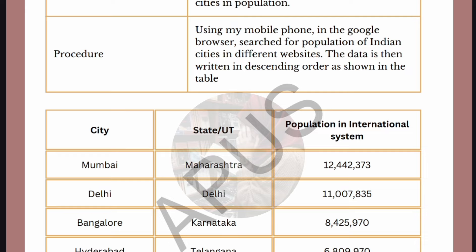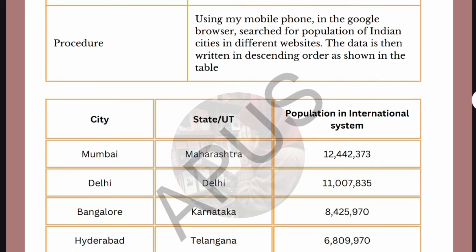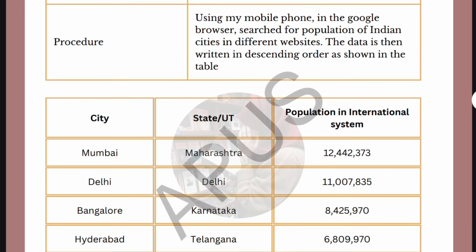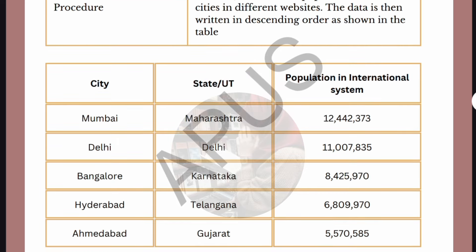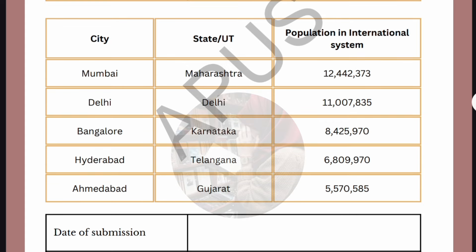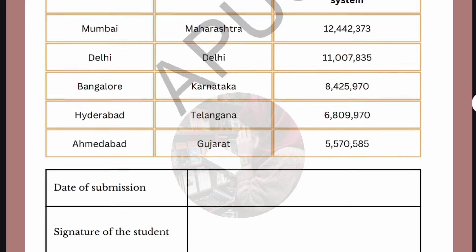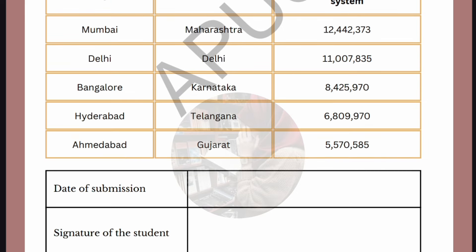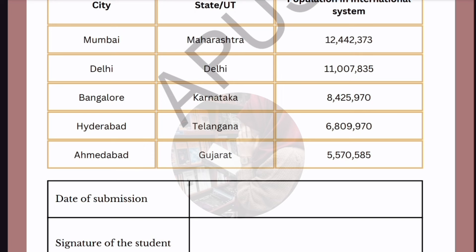You have to draw a table with three columns: the first column is City, then State, and after that Population in the International System. Mumbai's state is Maharashtra and population is 1 crore 24 lakhs 42,373. The second one is Delhi — its state is Delhi itself — and the population is 1 crore 10 lakhs 77,835.